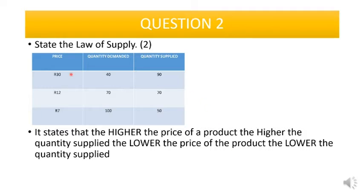If the price is high, for example 30 Rand, the quantity supplied is also high — we have 90 here. When the price is low, at a price of 7 Rand, only 50 are supplied.